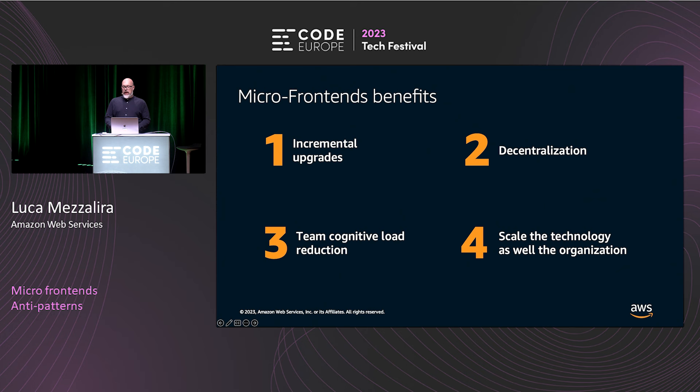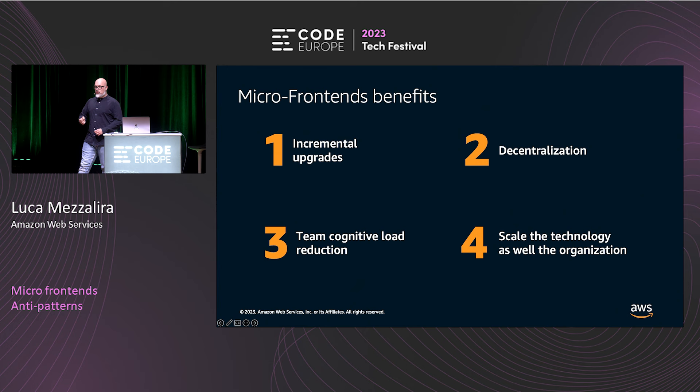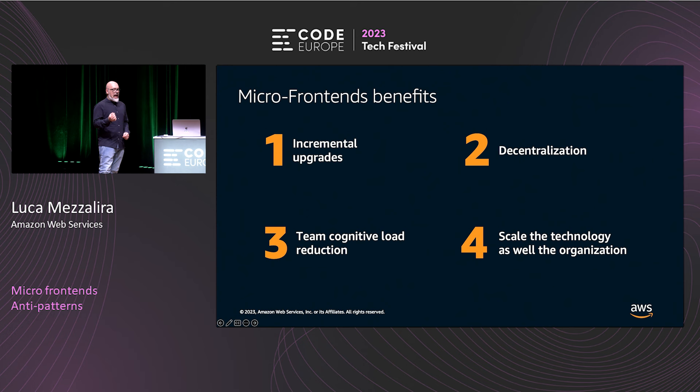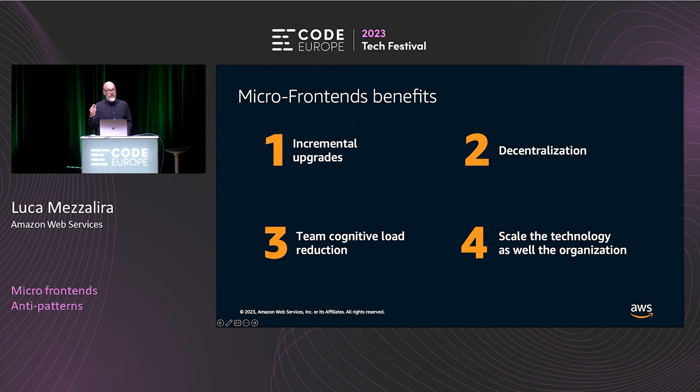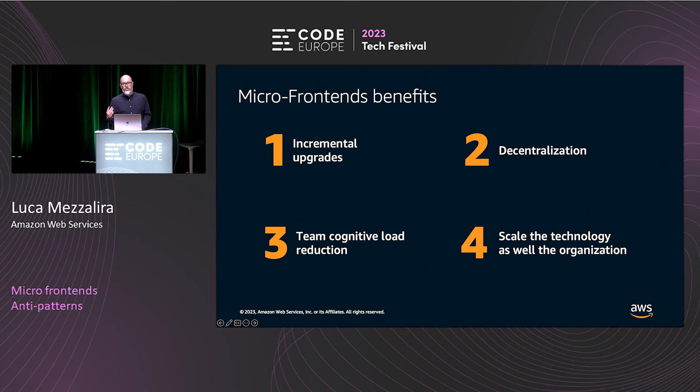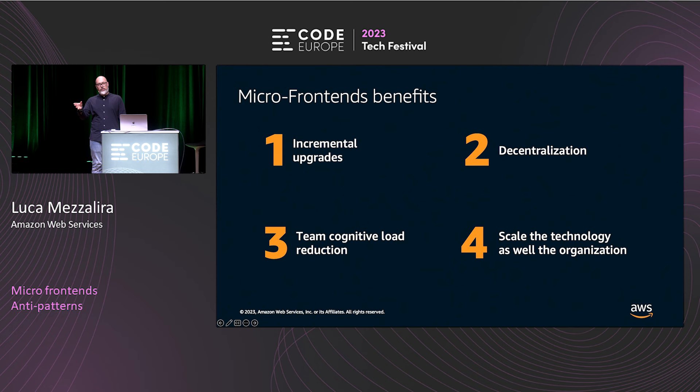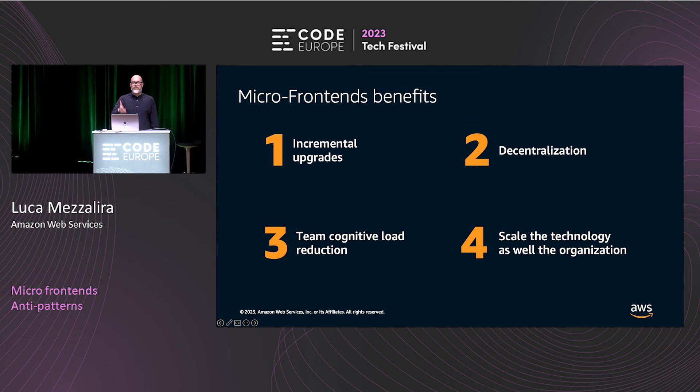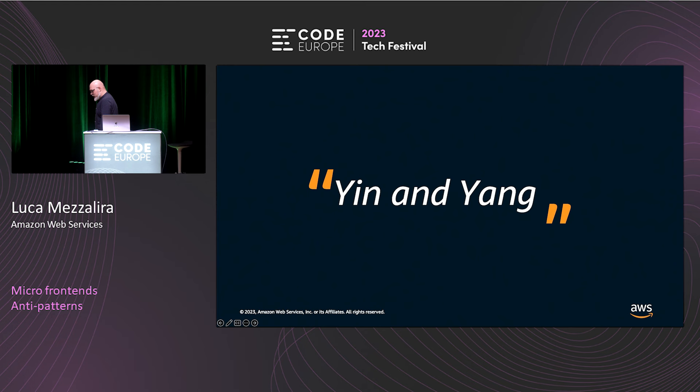Last but not least, remember that a distributed system is not only a technology decision. Every architecture goes hand in hand with the organization structure and the culture. Those three things affect each other — every decision on one affects the other two, and there is no way to avoid that. Therefore, remember that selecting monorepo or polyrepo is not just a technology choice — it's the way how your teams are going to communicate from that point onwards.